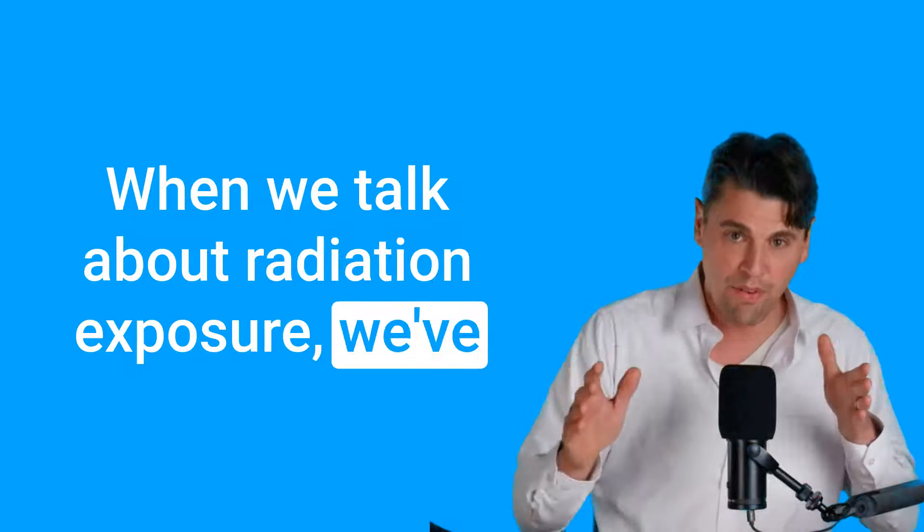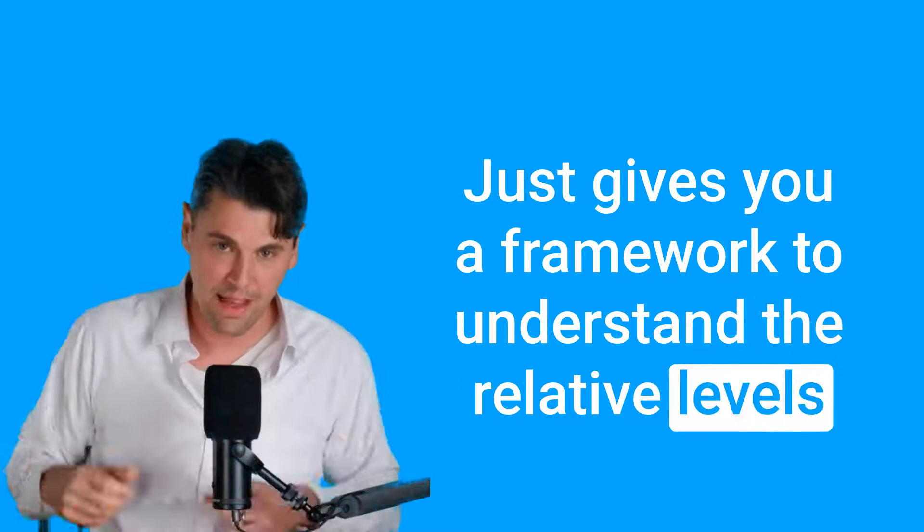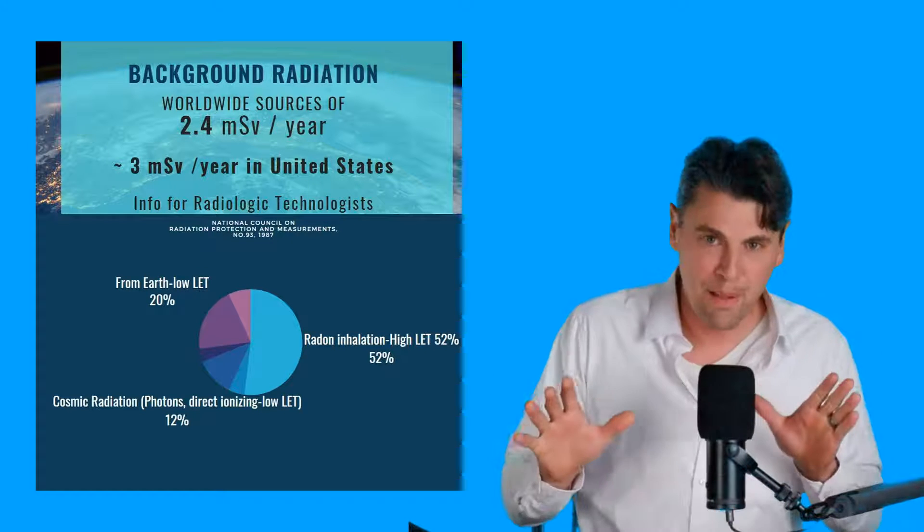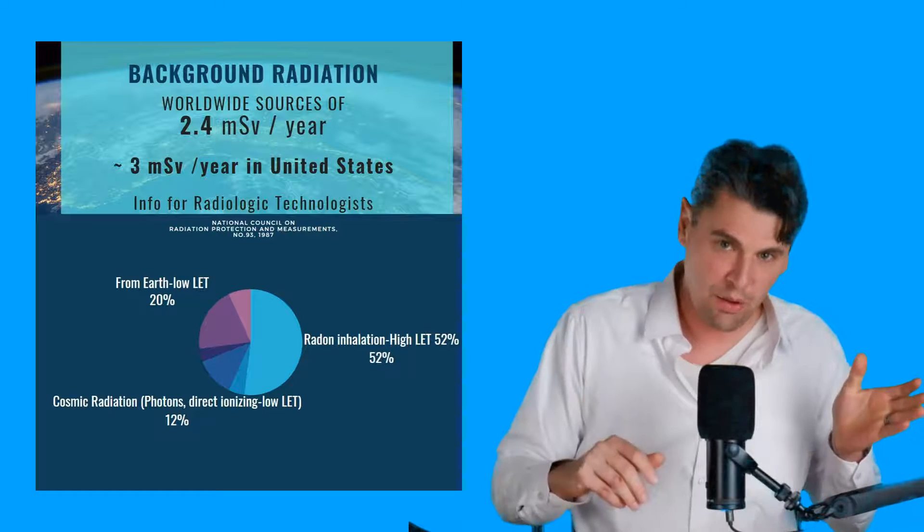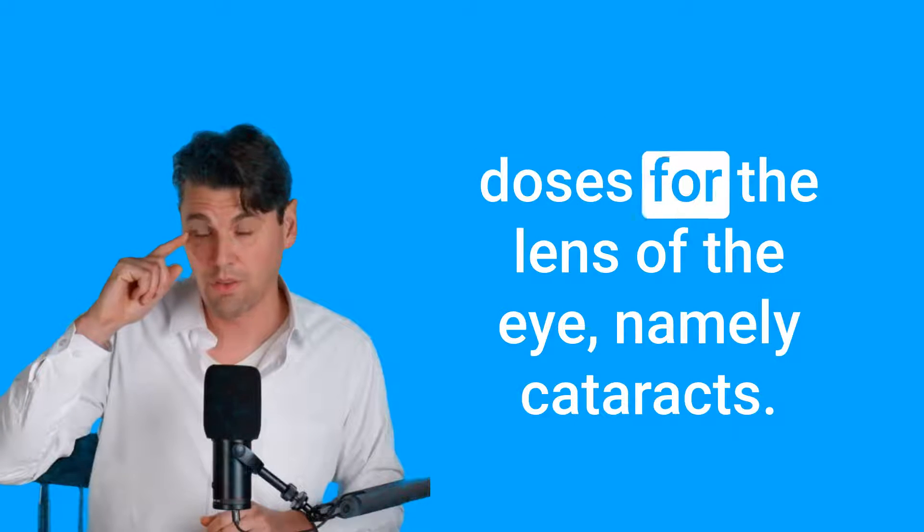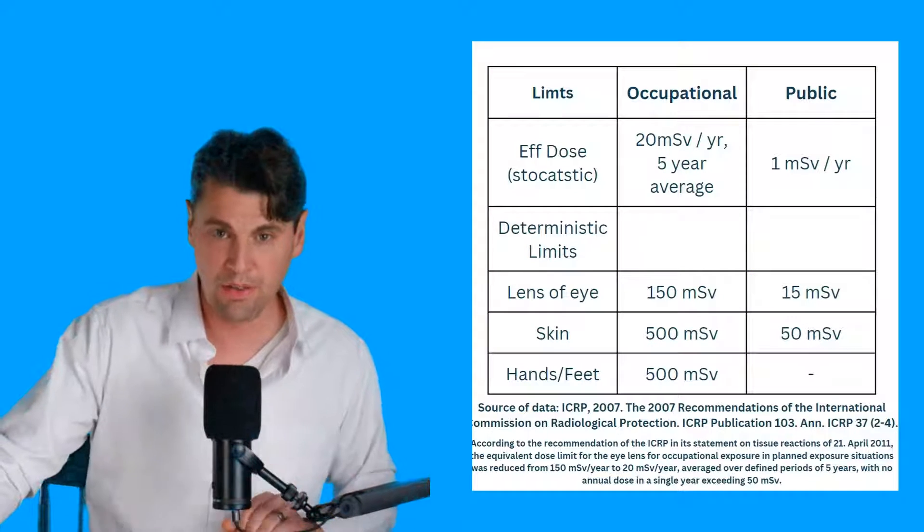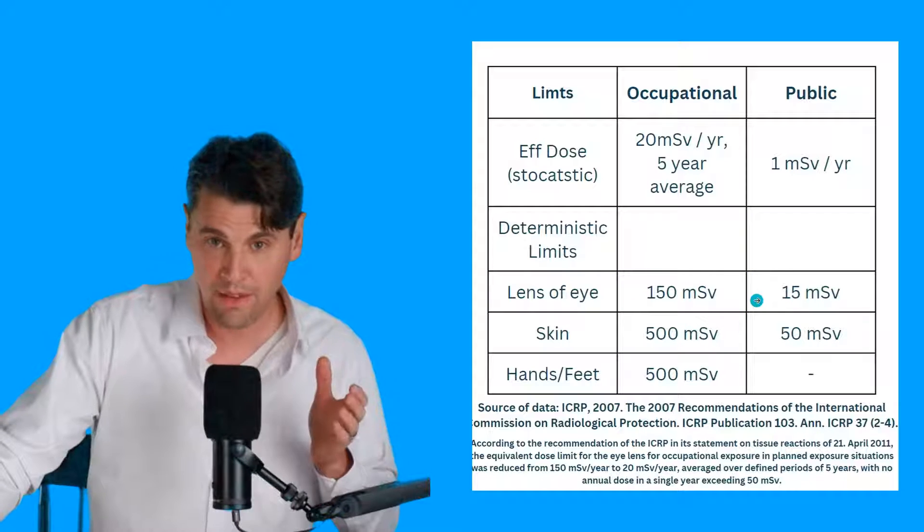When we talk about radiation exposure, we've had videos on background radiation. It just gives you a framework to understand the relative levels of background radiation in the world. Around 2 to 3 millisieverts per year, that's the background radiation. 2.4 is the global average, and closer to 3 is the average in the United States. But we have separate videos about deterministic and stochastic effects for radiation. We know there are deterministic effects at relatively higher doses for the lens of the eye, namely cataracts.